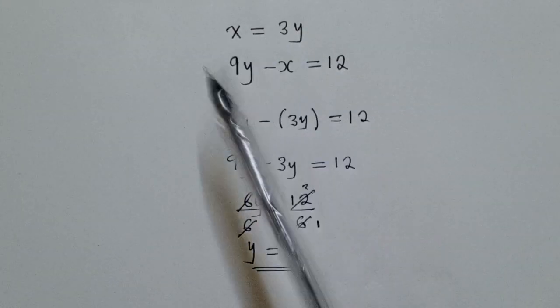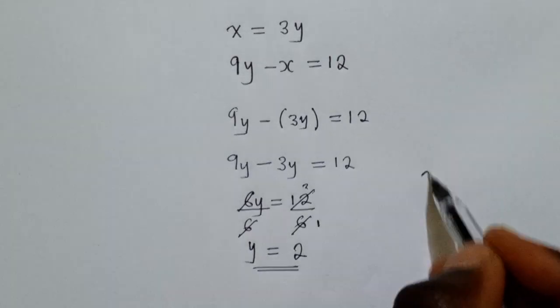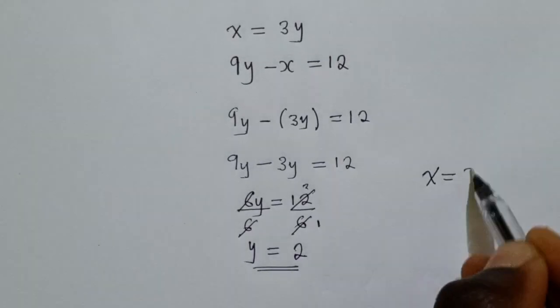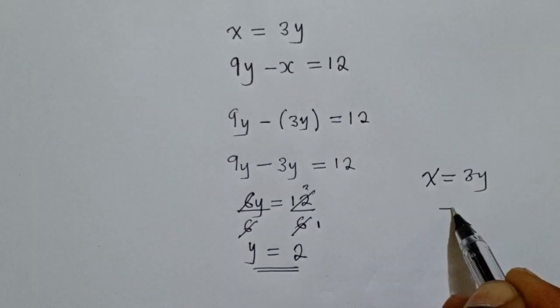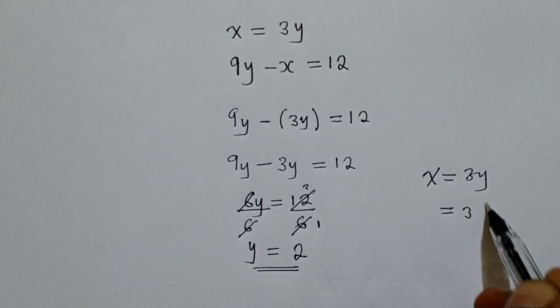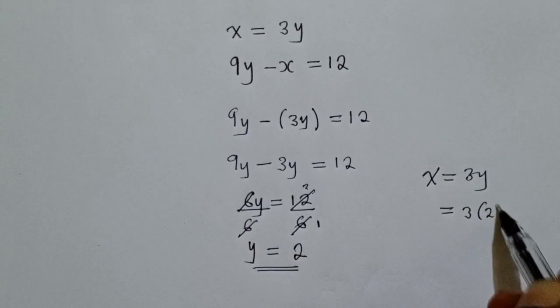Now the easiest will be to get the first equation. And the first equation looks like this, X is equal to 3Y. So we shall substitute the value of Y here, we shall have 3, open bracket, 2 there.